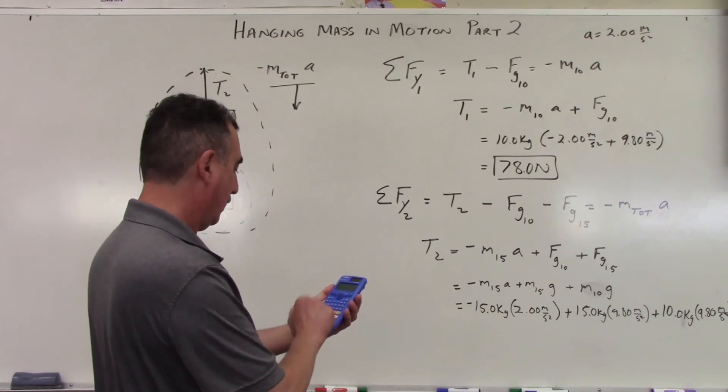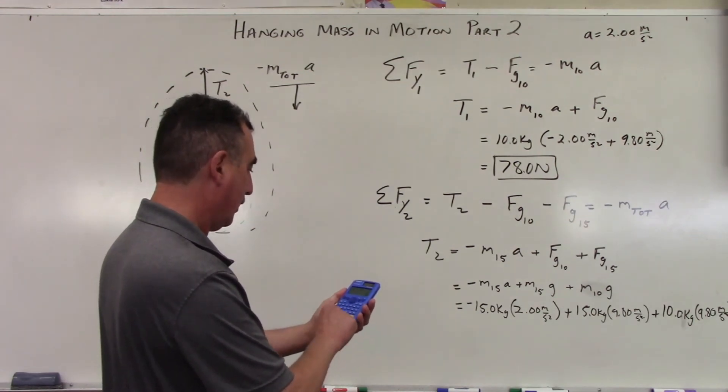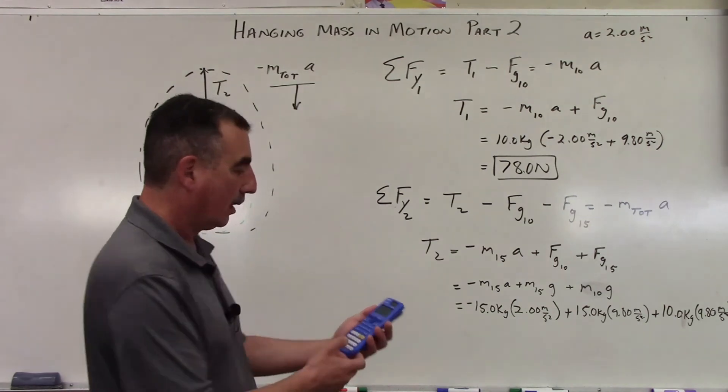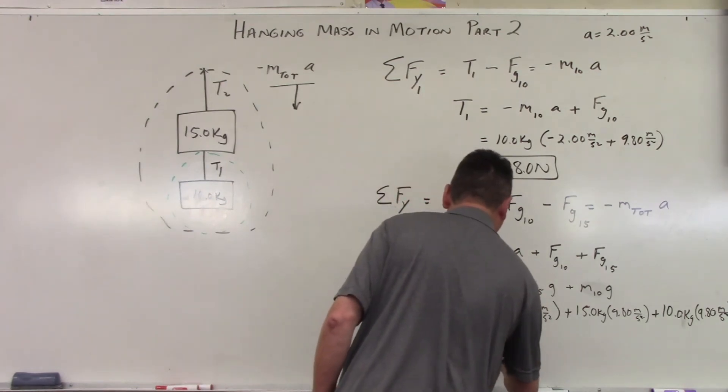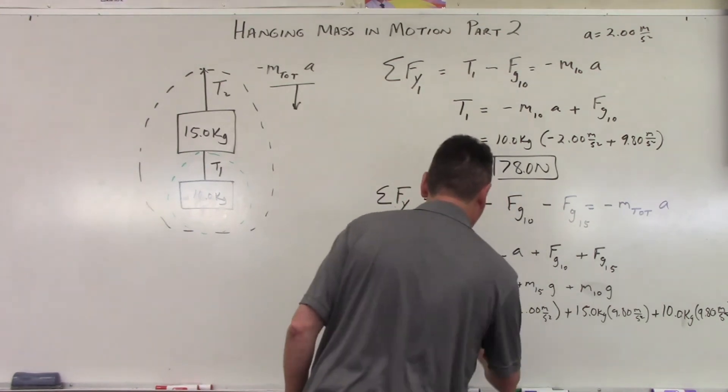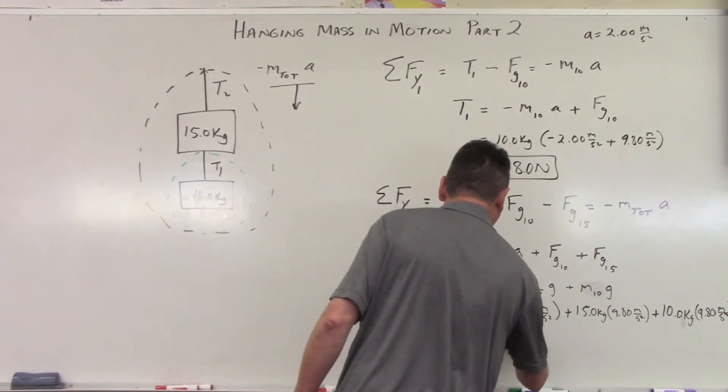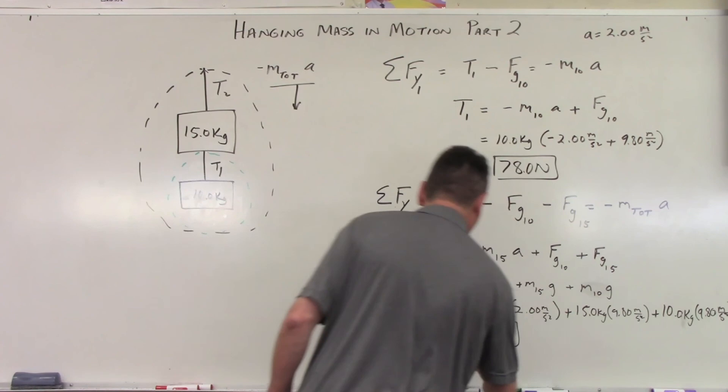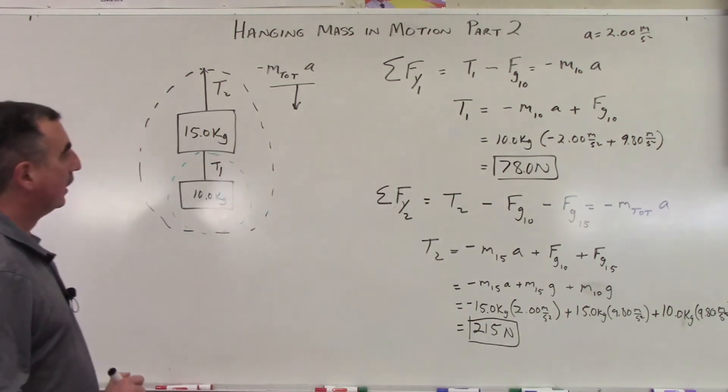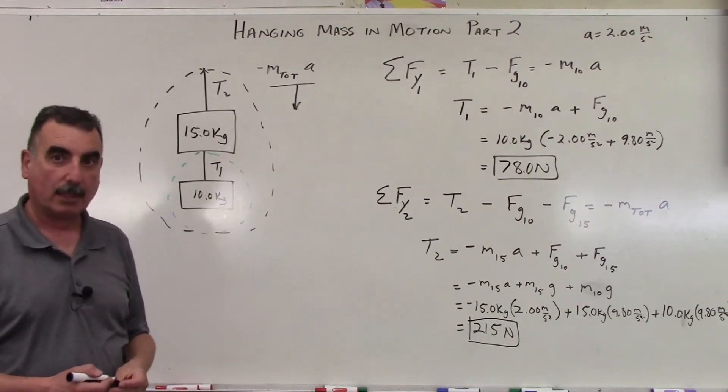So negative 15 times 2 plus 15 times 9.8 plus 10 times 9.8. Add it all up. And this is going to equal 215. 215 newtons. So a lot more tension on the way down. But this is how you would calculate. You break it into little pieces to solve for these.